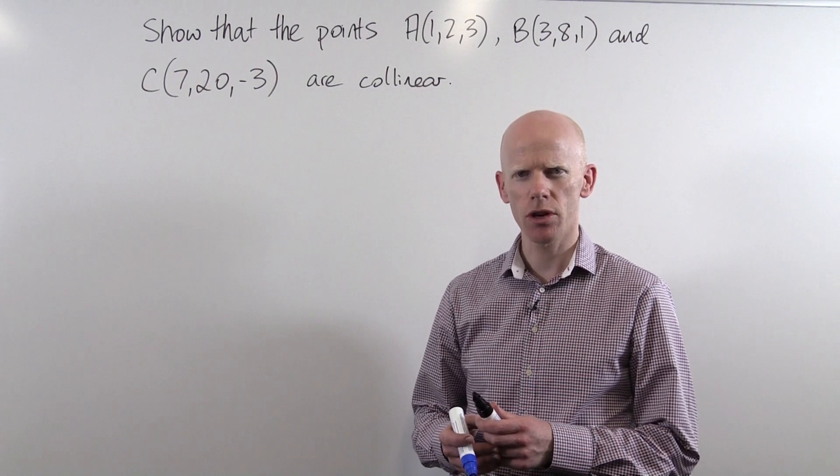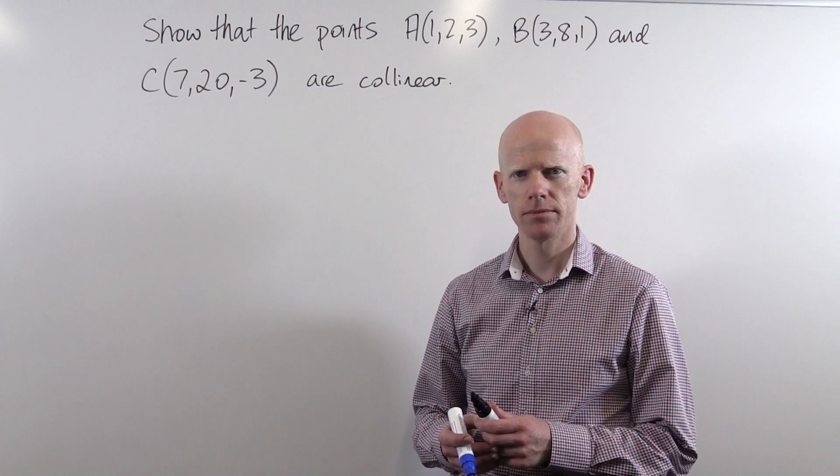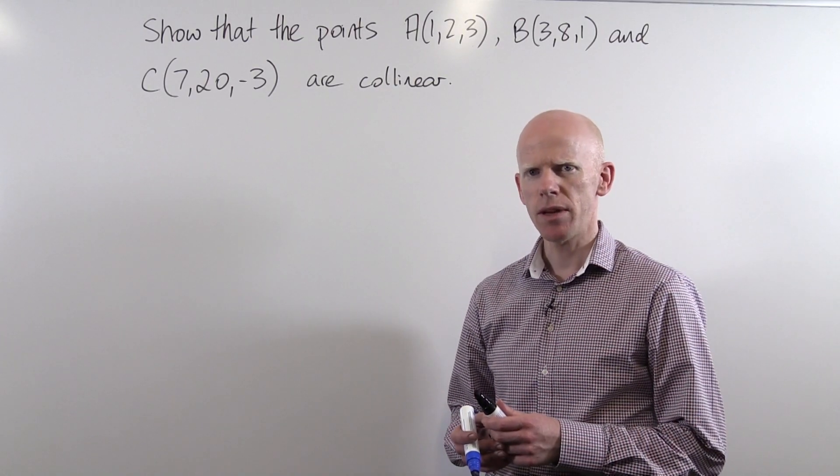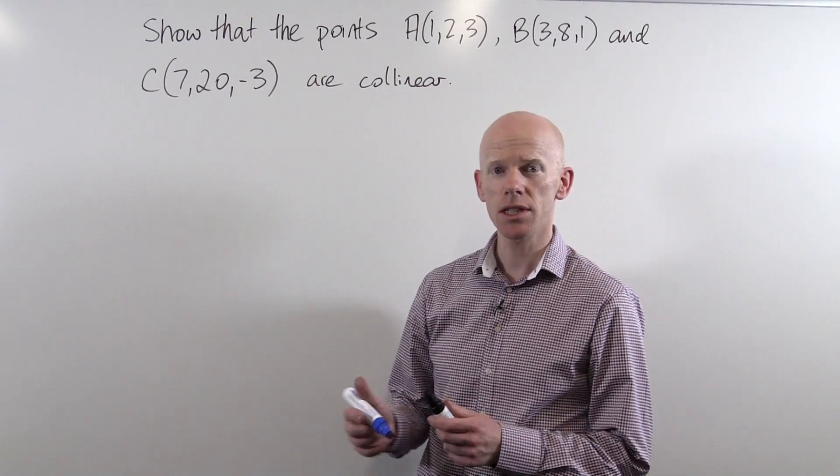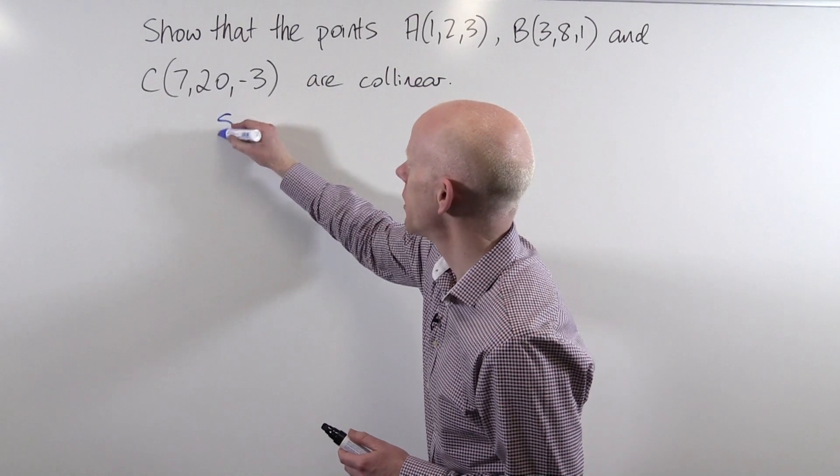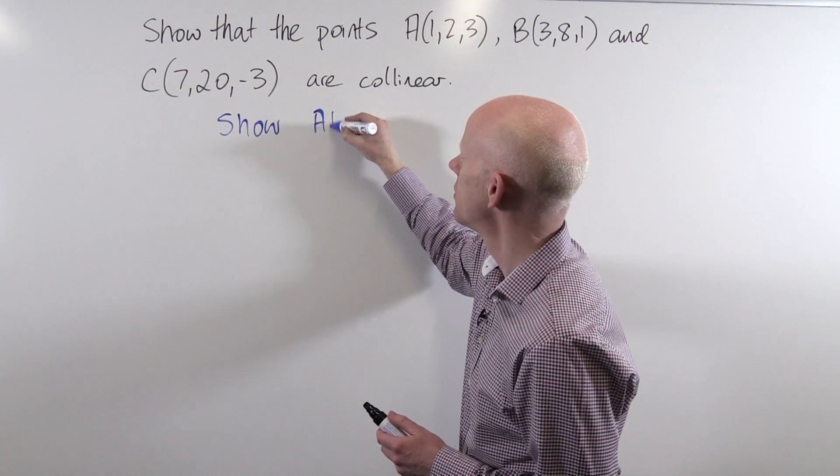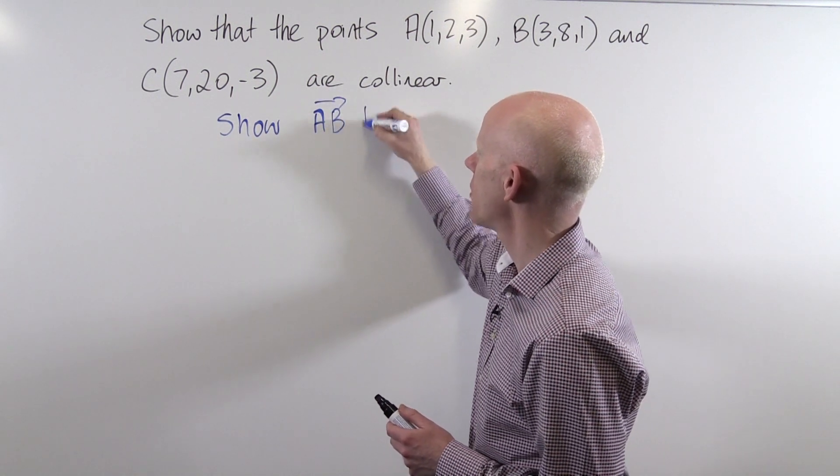What strategy will we use to show this? Three points are collinear if their respective geometric vectors, in this case AB and AC, are parallel.